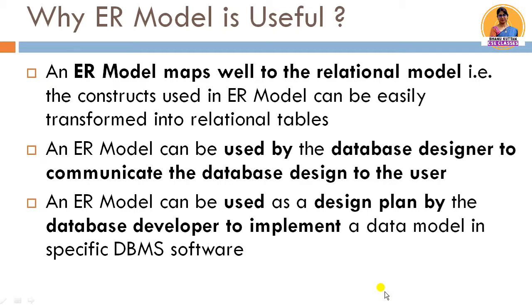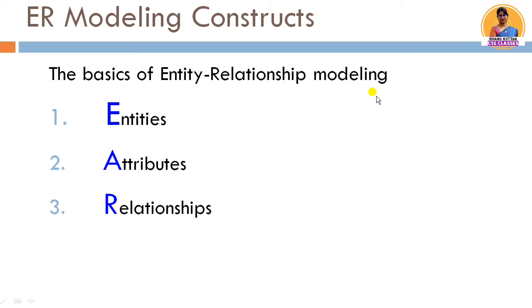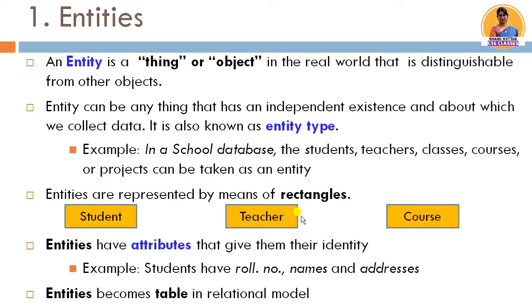Starting with the ER modeling constructs — basically three constructs are important: entities, attributes, and relationships. An entity is any object or thing that can be distinguished from other objects. Like a person — I am an entity, you are an entity. An entity can have independent existence. A company, a job, a department, a student, a course — anything with independent existence can be an entity.